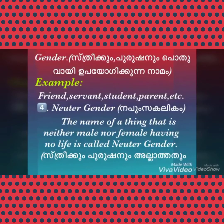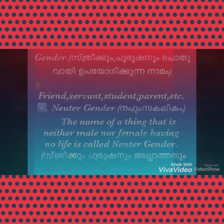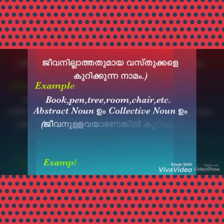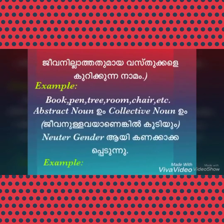4. Neutral Gender: The name of a thing that is neither male nor female — having no life — is called Neutral Gender. These are non-living things. For example: book, pen, tree, room, chair, etc.